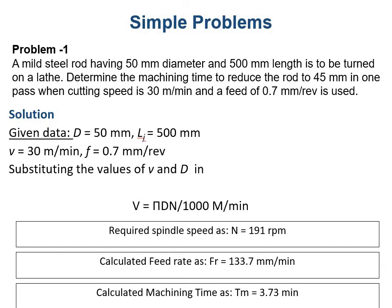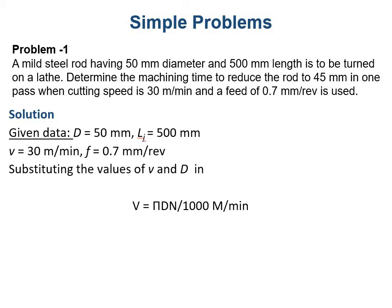Let's take an example. This is a type of normal example asked in university examinations for about five to six marks. A mild steel rod having 50 millimeter diameter and 500 millimeter length is to be turned on a lathe.